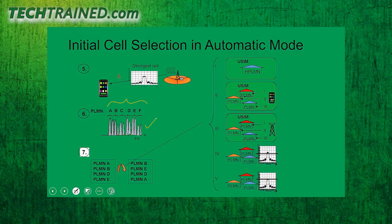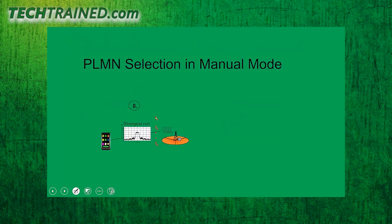Last but not least, any other PLMNs that exist will be arranged in terms of decreasing signal strength. Using these five steps, the PLMN list is arranged, and whichever PLMN comes on top will be selected; after that, the UE proceeds to cell selection with that specific PLMN. This is automatic PLMN selection. In manual mode, even if a stronger PLMN is available, you can view the list on your phone and select whichever PLMN you prefer.